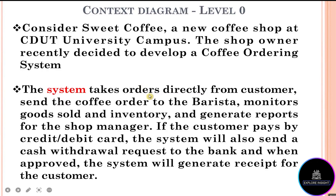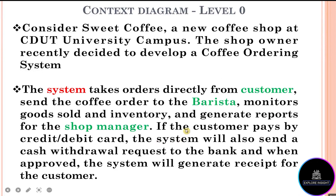Let's read through to identify external entities. The system takes orders directly from the customer — so our customer will be represented with the external entity component. It then sends the coffee order to the barista — so barista is another external entity. Next, it monitors goods sold and inventory and generates reports for the shop manager — so shop manager is another. And if the customer pays by credit or debit card, the system will also send a cash withdrawal request — indicating another relationship.